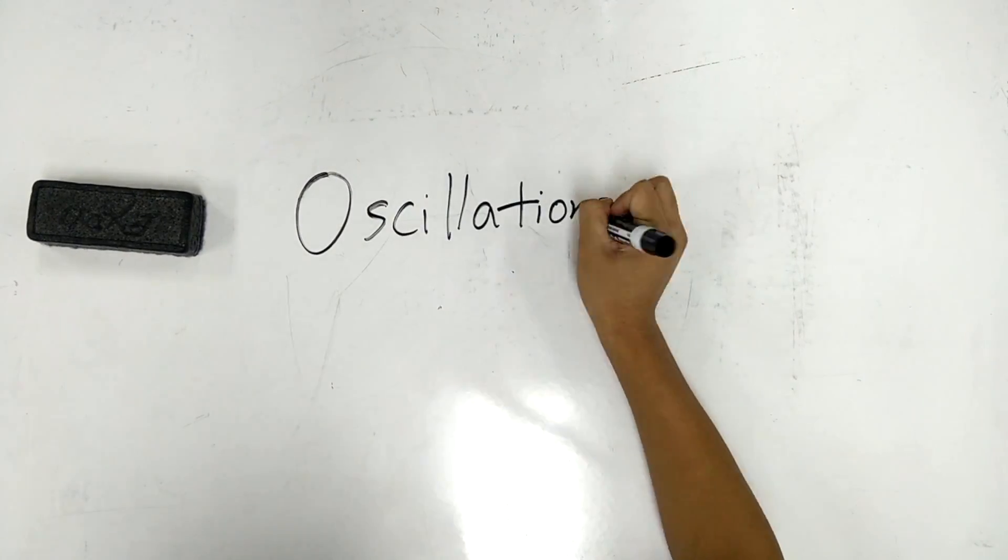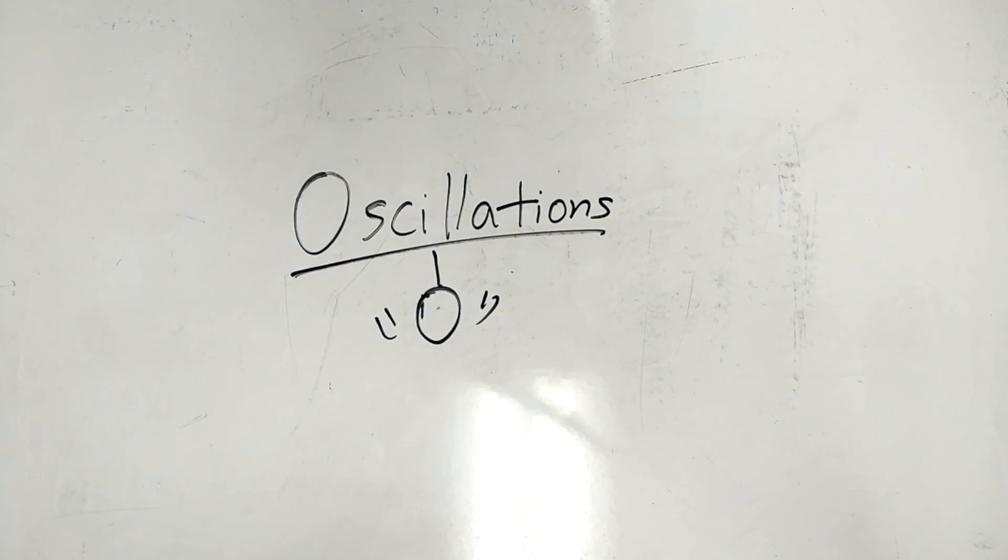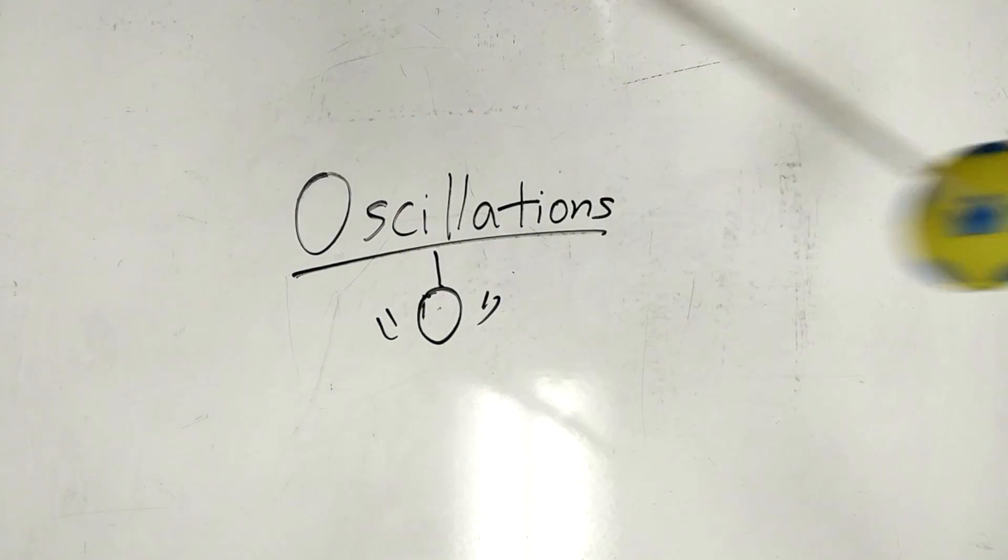Lastly, we have oscillations. Oscillations are simply repeating motion. It could be repeating rotations or repeating translations. This pendulum is a great demonstration of oscillation.